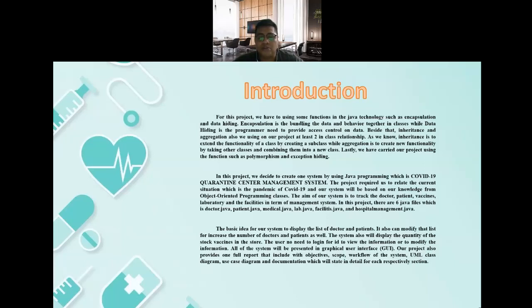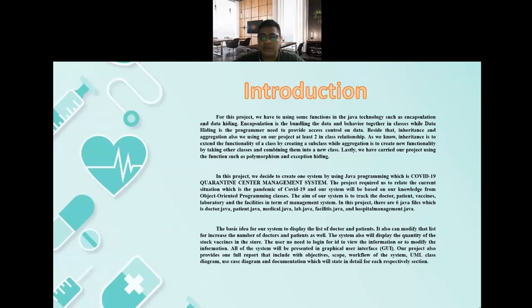The aim of our system is to track the doctor, patient, vaccine, laboratory, and facilities in terms of the management system. In this project, there are six Java files: Doctor.java, Patient.java, Medical.java, Lab.java, Facilities.java, and HospitalManagement.java. The basic idea for our system is to display a list of doctors and patients, modify the list to increase the number of doctors and patients, and display the quantity of the vaccine stock in store. The user does not need to log in with an ID to view or modify information, and all of the system will be presented in a graphical user interface.